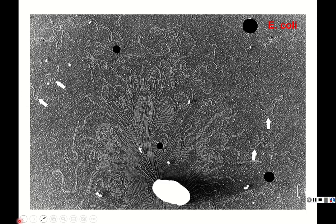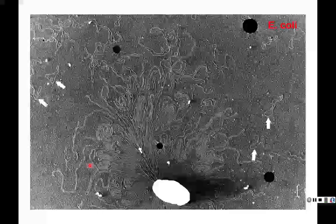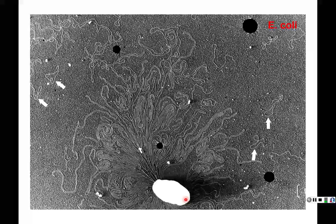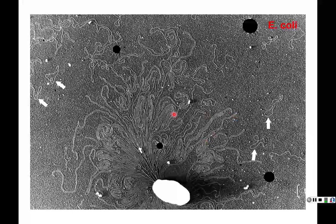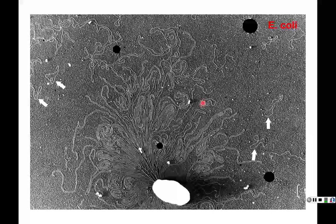Here we have a picture of an E. coli cell where the DNA has been let out of it. The arrows point to small circles — which would actually be plasmid DNA — and the genome of the bacteria cell itself, the chromosome, is this much longer piece that's coiled in on itself.